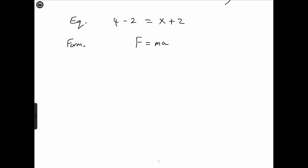In a formula — just for your information — a formula is a special type of equation that describes the relationship between two or more quantities. This formula describes the relationship between mass and acceleration, and states that to calculate force, we multiply mass and acceleration. When multiplied, we get F, which is the product of mass and acceleration.